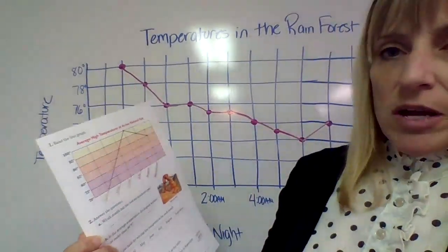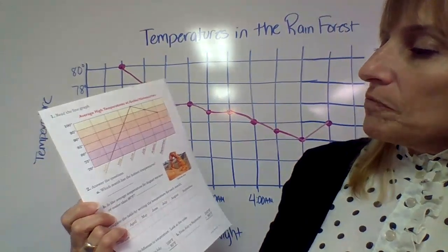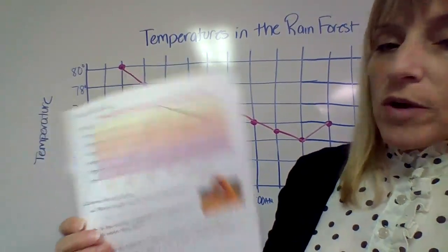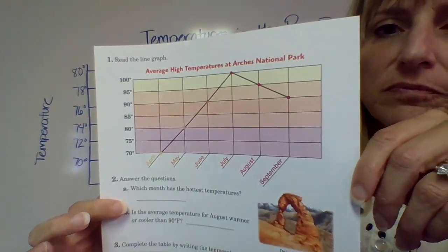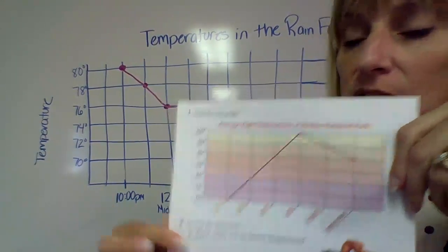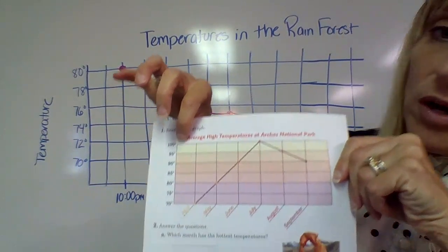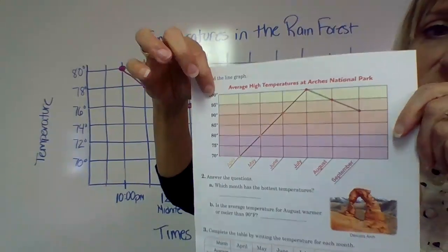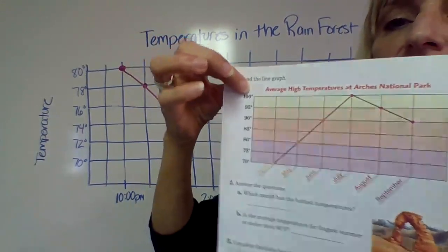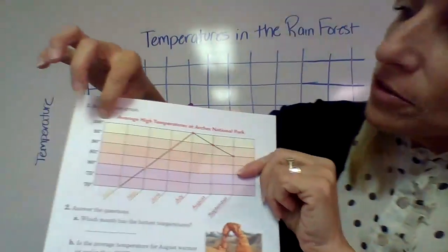All right, I look at the graph. We read it. Now we're going to go to number two, answer the questions. Which month has the hottest temperature? So the hottest temperature obviously would be the one way up here because 100 is the hottest temperature on this graph.